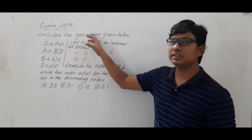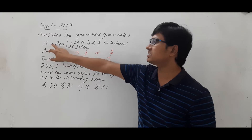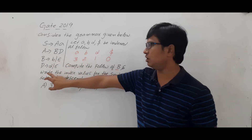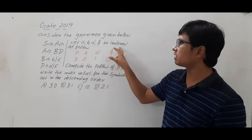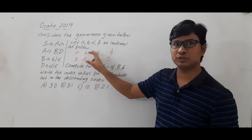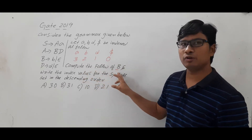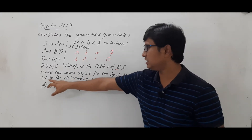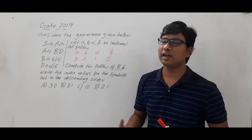Consider the grammar given below with the following productions: S → AA, A → BD, B → b | ε, D → d | ε. Let A, B, D, and dollar be indexed as follows: A's index value is 3, B's index value is 2, D's index value is 1, and dollar's index value is 0. Compute the Follow of B and write the index values for the symbol set in descending order.